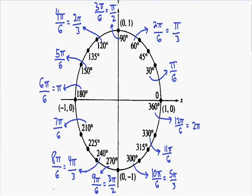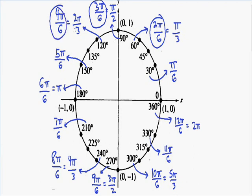Please forgive my horrible artwork. If 30 degrees is pi over 6, then 60 degrees must be 2 pi over 6, which reduces to pi over 3. 90 degrees is 3 pi over 6, which reduces to pi over 2. 120 is 4 pi over 6, which reduces to 2 pi over 3. 150 is 5 pi over 6. 180 is 6 pi over 6, which reduces to pi. Every 30 degrees you increase by pi over 6 radians.